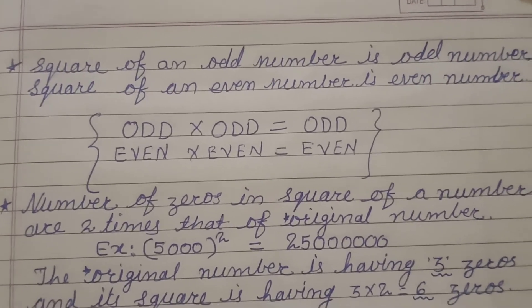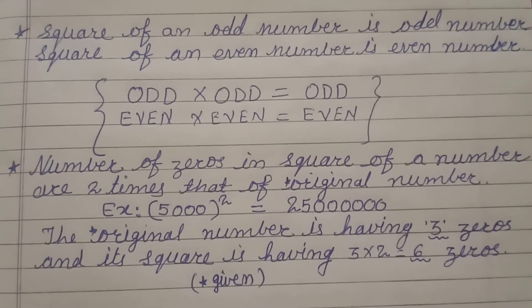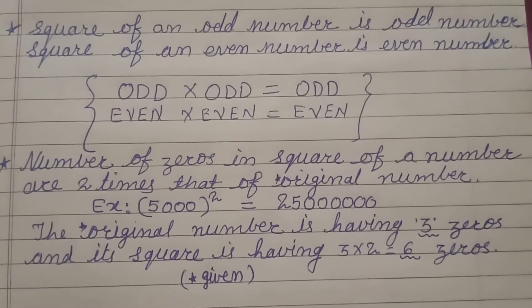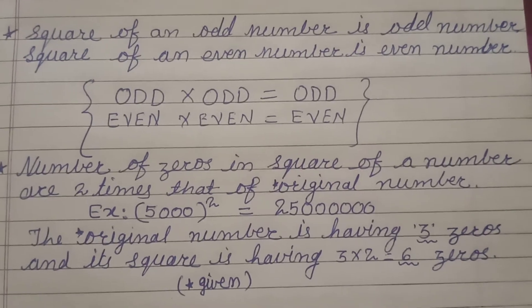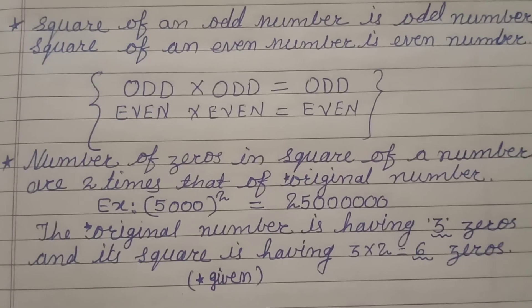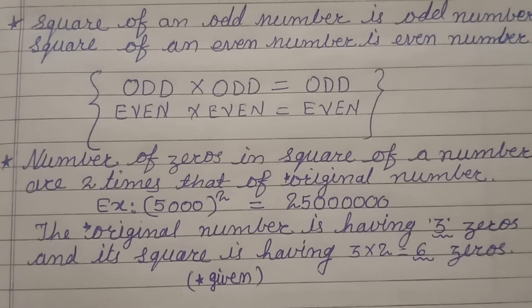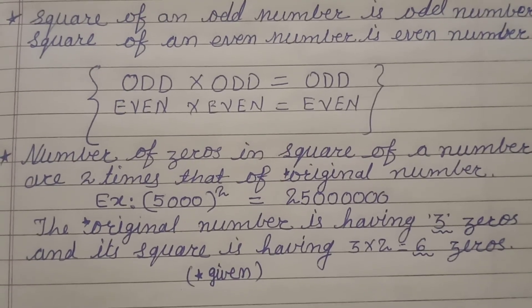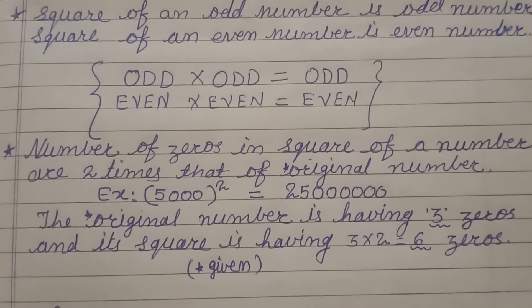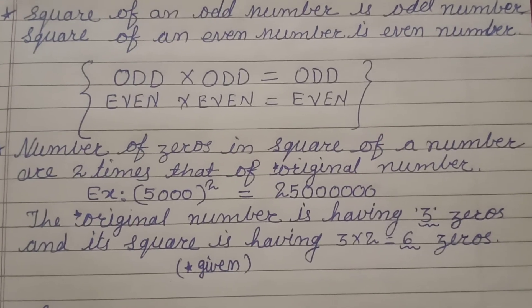Now let us see an interesting trick to find how many zeros will be there in the squares of the number if it is ending with 0. The number of zeros in square of a number are 2 times that of original or given number. For example we will find out square of 5000. 5000 is having 3 zeros and its square is having 6 zeros in it. The original number is having 3 zeros and its square is having 2 times the zeros of the given number, that is 3 times 2 or 6 zeros.